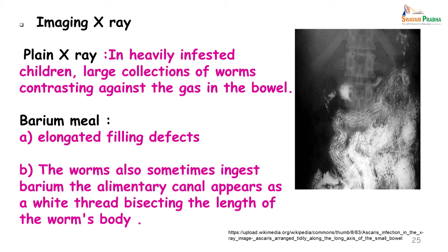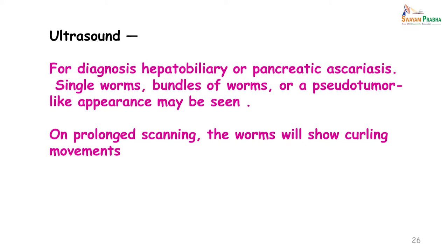On the right side you can see elongated filling defects which demonstrate the presence of roundworms in the bowel. Ultrasound is usually done for diagnosing hepatobiliary or pancreatic ascariasis. When a patient has hepatobiliary or pancreatic ascariasis the patient will also have colicky pain. Single worms, bundles of worms, or even a pseudotumor-like appearance can be seen on ultrasound. On prolonged scanning you may even be able to see the worms showing a curling movement.